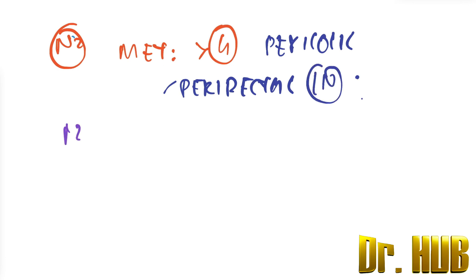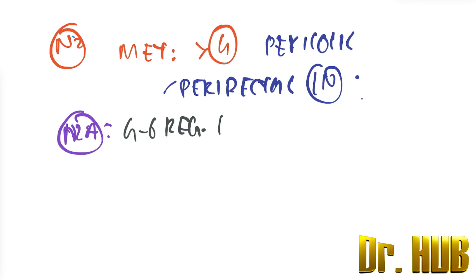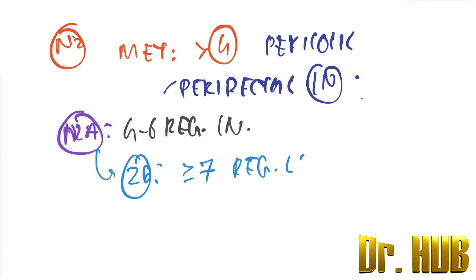In the 8th edition, N2A means 4 to 6 regional lymph nodes are positive. N2B means greater than or equal to 7 regional lymph nodes are positive.